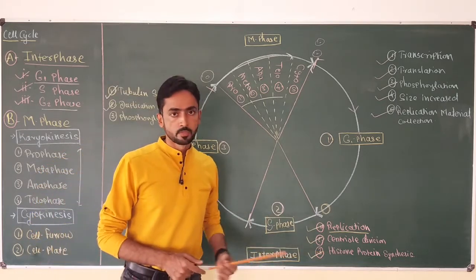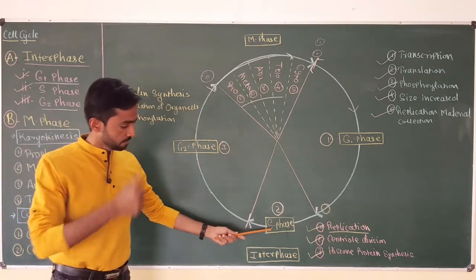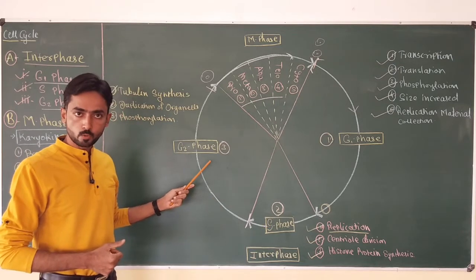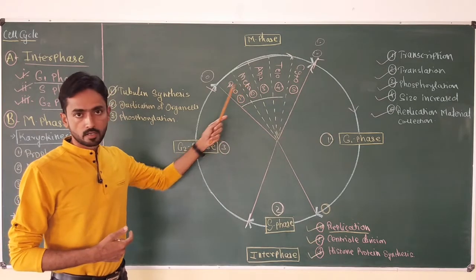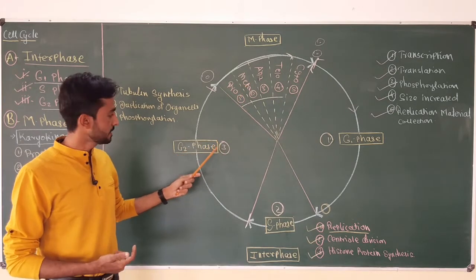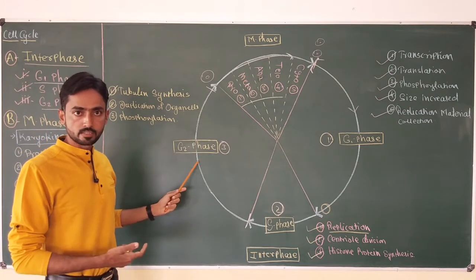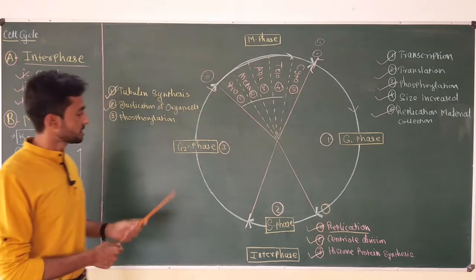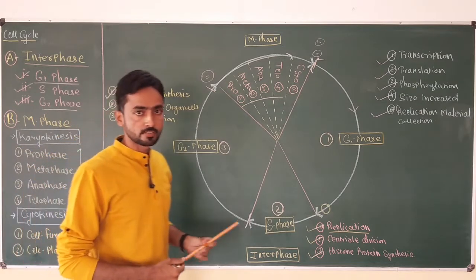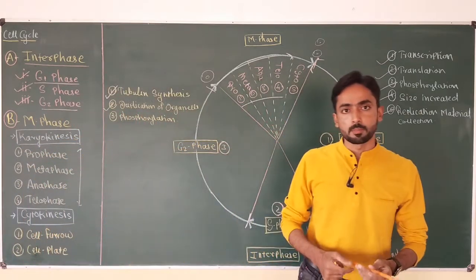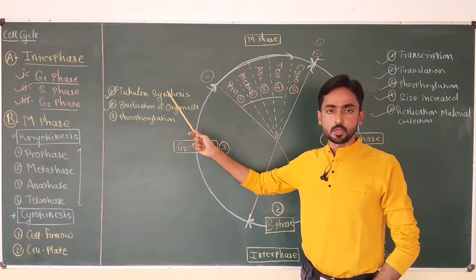Histone protein synthesis also takes place during the S phase. These are positively charged proteins needed for supercoiling of the newly synthesized DNA. After S phase, the cell enters G2 phase, also called GAP2, post-synthesis, or pre-mitotic phase. In G2, the cell prepares itself for actual cell division — that means it prepares for M phase. During G2, duplication of cell organelles occurs; organelles like mitochondria, chloroplasts, and Golgi complex get duplicated. Tubulin synthesis also occurs in G2.